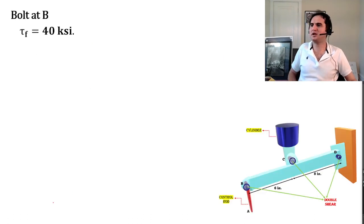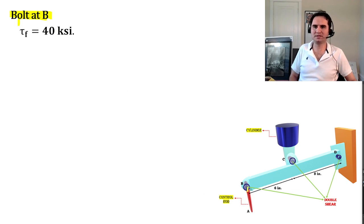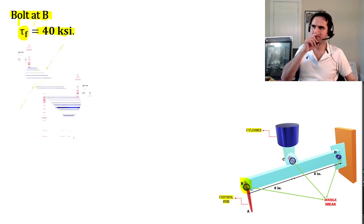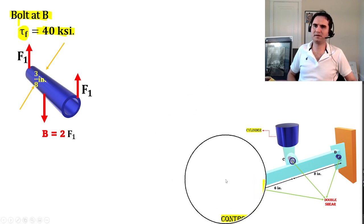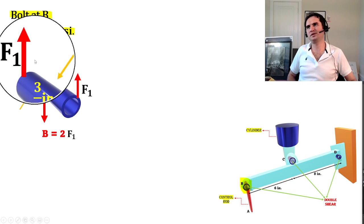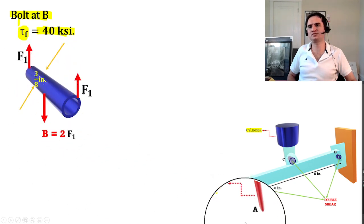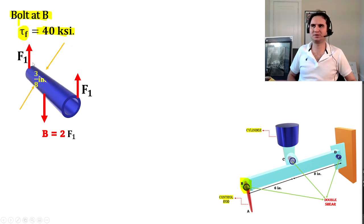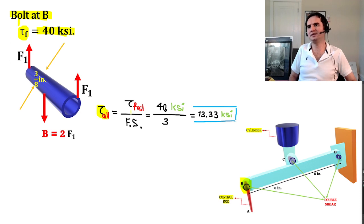Next, we observe the bolt at B. The bolt at B is also in double shear with τ_failure = 40 KSI. The allowable shear stress is τ_allowable = τ_failure / FS = 40 / 3 = 13.33 KSI.